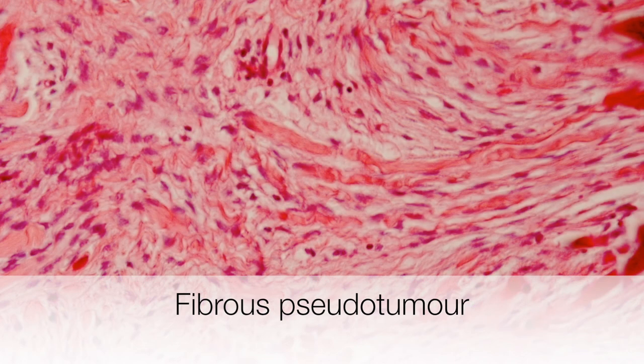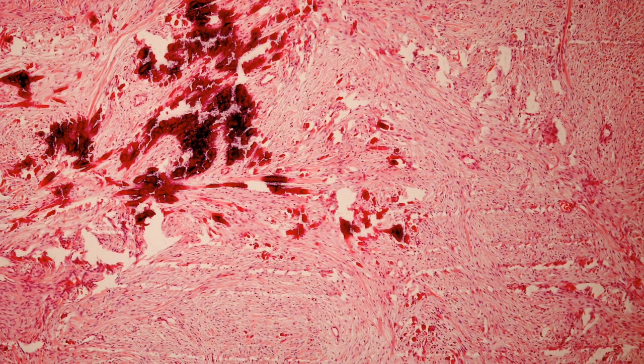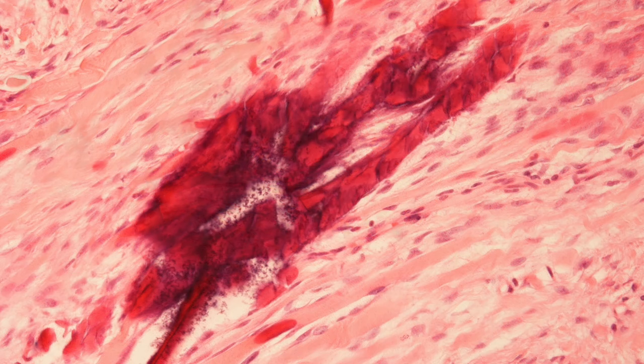In summary, fibrous pseudotumours are reactive conditions. They are not neoplastic. They are benign and arise from the paratesticular structures, including the tunics, epididymis, and spermatic cord. And confusingly, these lesions have multiple other names.